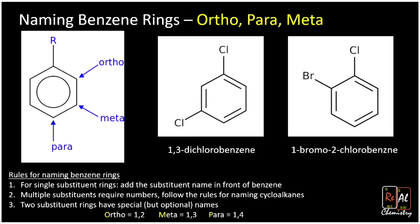For 1-bromo-2-chlorobenzene, positions 1,2 means we use ortho. So we write ortho-bromochlorobenzene, or with the abbreviation, o-bromochlorobenzene. That's using ortho, meta, and para to name two-substituent benzene rings.